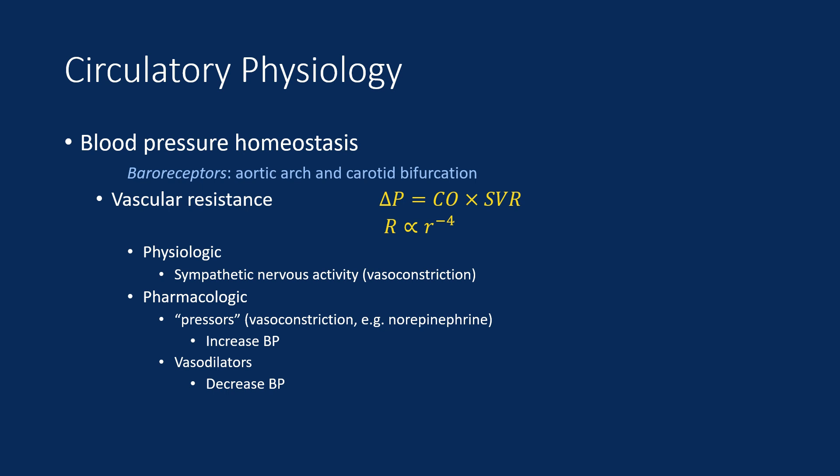Blood pressure homeostasis: how does the body sense blood pressure? The simplest and fastest mechanism is through baroreceptors — pressure-sensitive receptors in the aortic arch and carotid bifurcation. They sense changes in pressure and through negative feedback the body adjusts. The most powerful way to adjust blood pressure is through systemic vascular resistance, and the most powerful way to adjust resistance is through the radius of the arteries. Physiologically this is done through the sympathetic nervous system, which vasoconstricts; pharmacologically through drugs like norepinephrine. Vasoconstriction increases resistance and increases blood pressure. Vasodilating mechanisms can decrease resistance and decrease blood pressure.